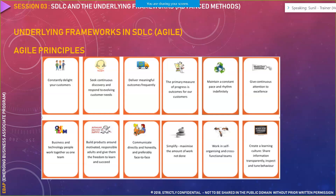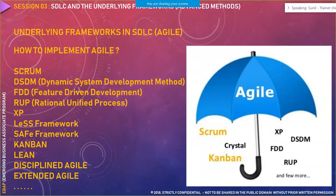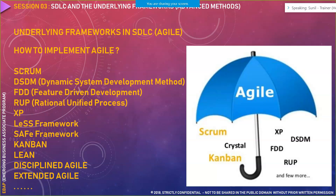The twelfth principle: create a learning culture — share information transparently, inspect and tune behavior. We have to respect each individual's perspective, understand their viewpoint, and share learning. If you find something, share it with others in the team. These were the 12 principles on which agile and scrum are based. Under the agile umbrella we have scrum, crystal, kanban, extreme programming, DSDM, feature-driven development, rational unified process, lean, disciplined agile, extended agile, SAFe framework, and LeSS framework — all come under the agile umbrella. For example, LeSS is used for large-scale projects. SAFe is the enterprise version for even more complex projects.